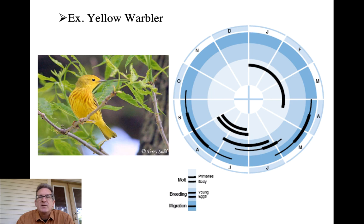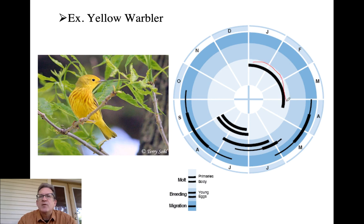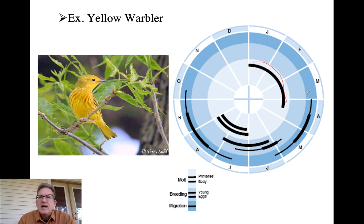Because of the energetic expenditures associated with each annual event, birds can't overlap them — they subdivide these three key events at different times of the year. Here's a good example looking at the annual cycle of a yellow warbler, a neotropical migrant. We should be seeing yellow warblers here in East Texas now. In January through March, birds are molting on the wintering ground, going through the pre-alternate molt.